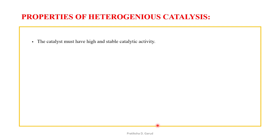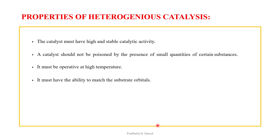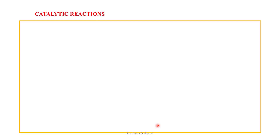The properties of heterogeneous catalysts are: the catalyst must have high and stable catalytic activity; it should not be poisoned by small quantities of certain substances; it must be operative at high temperatures; it must have the ability to match substrate orbitals; and it should be capable of forming complexes with a range of coordination numbers.